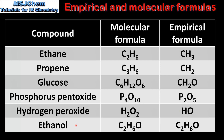And finally we have ethanol. The molecular formula for ethanol is C2H6O, and the empirical formula is the same. So from this table we can see that for some compounds the molecular formula and empirical formula are different, but for some compounds it's the same.